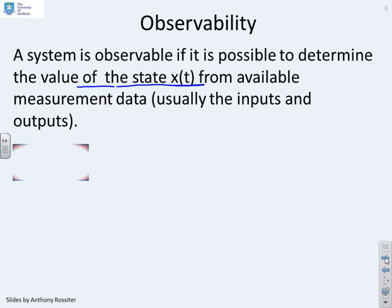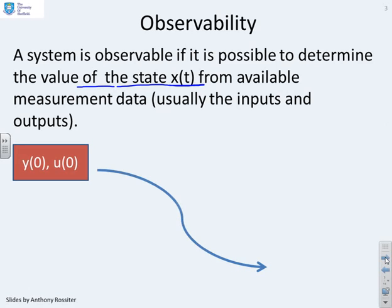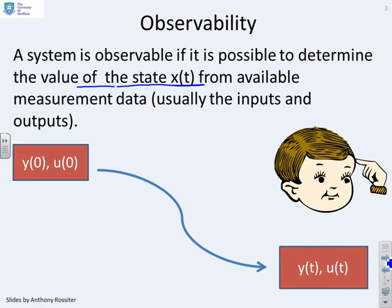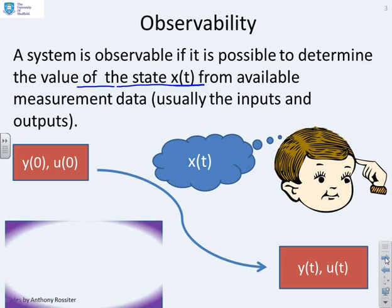So if we use a picture to illustrate this, let's assume you know initial values of the output and the input and then you also know the trajectory of the outputs and the inputs. So the question is, can you use all this information on y of t and u of t to determine what x of t is? And that's the observability problem.